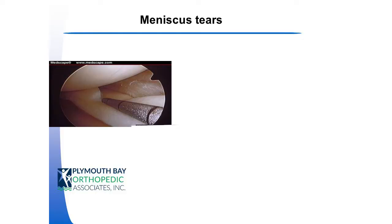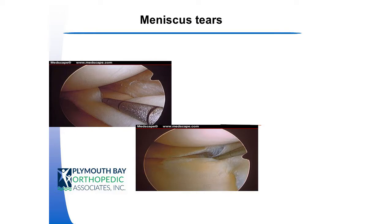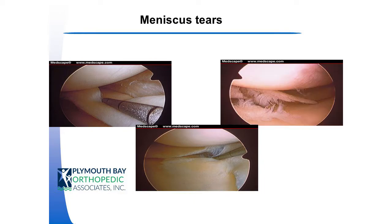This is what an unstable meniscal tear looks like through an arthroscope. This is a probe that you can pull the meniscal tissue away — this happens to be a bucket handle tear, and this is a flap tear. You can see how these two could produce mechanical symptoms, as pretty large pieces of tissue can float around. And then this is more of a degenerative-type tear: what the picture would look like inside a knee joint, and you can even see some of the arthritic changes on the femoral condyle.